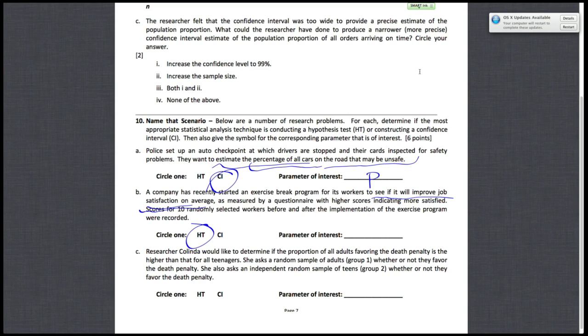And, since you're taking scores for 10 randomly selected workers before and after the implementation of the exercise program, you're taking two measurements for one worker, so each measurement is paired, so the test is a paired t-test. And, your parameter of interest is mu d, your population mean difference.